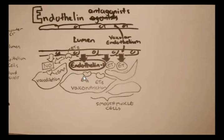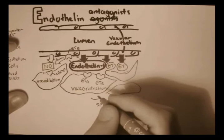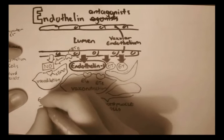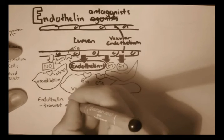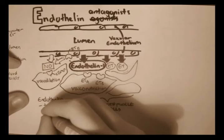So endothelin can bind to these receptors here, causing vasoconstriction. It can also bind to the vascular endothelium cells. Again, different, causing the vascular endothelium to secrete another substance, nitric oxide, which then can bind to the smooth muscle through a different receptor, cyclic GMP mechanism, G protein, causing vasodilation.